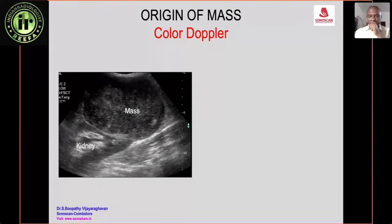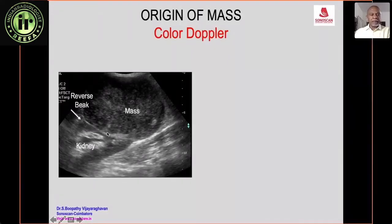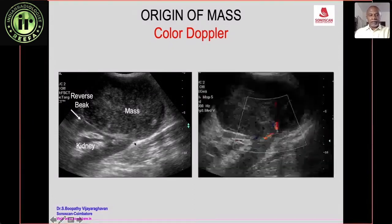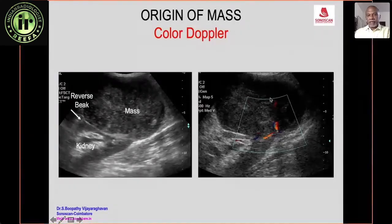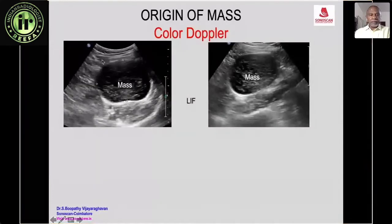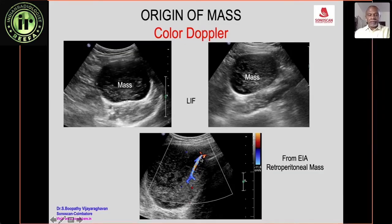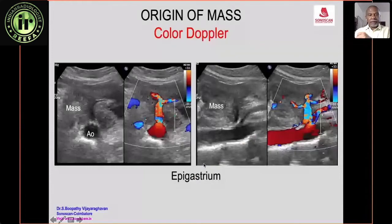Color Doppler helps determine the origin of a mass. A renal mass with reverse beak sign appears to not arise from the kidney, but color Doppler shows the feeding vessel coming from the renal artery — confirming renal origin of an exophytic mass. A mass in the left iliac fossa supplied by a branch of the external iliac artery cannot be intra-abdominal, narrowing it to an intraperitoneal origin. A large irregular mass with the celiac artery running within it confirms a celiac lymph node mass.